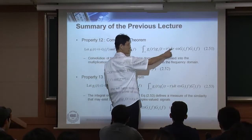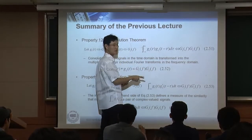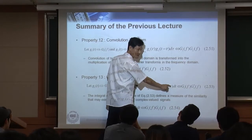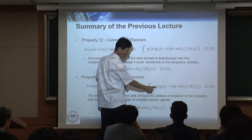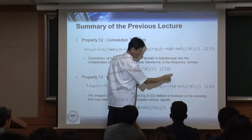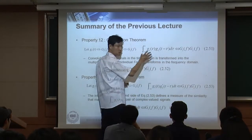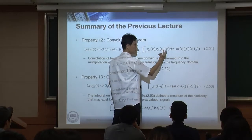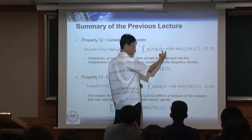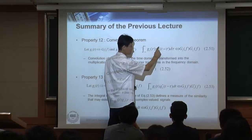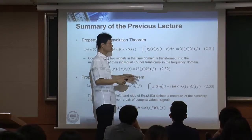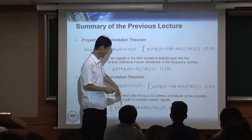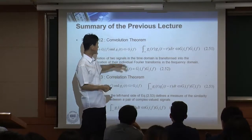To compare convolution and correlation directly, let's change the variable. When you compare the two, the difference is that in the correlation theorem one argument is flipped. That's the only difference — and also the second signal has a complex conjugate. So there are only two differences between the correlation theorem and the convolution theorem: the signal is flipped, and there is a complex conjugate.